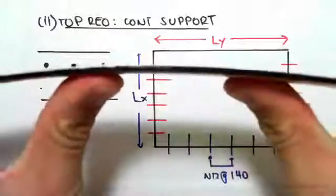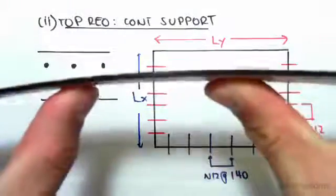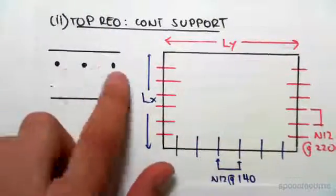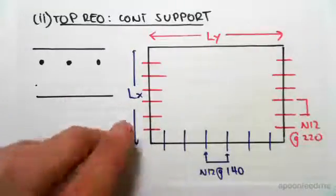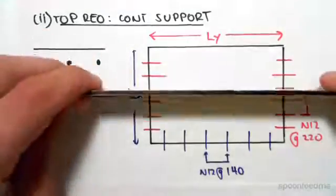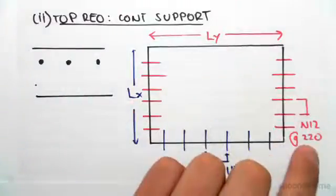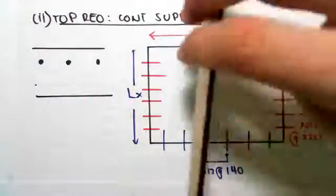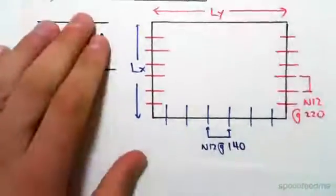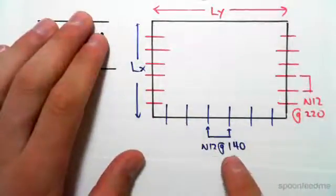We found that spanning the ly, those steel bars there are at a spacing of 120 mils. Spanning the lx, the spacing of those are at 140 mils, N12 bars. And the last thing we found was the top reinforcing at the discontinuous edge.